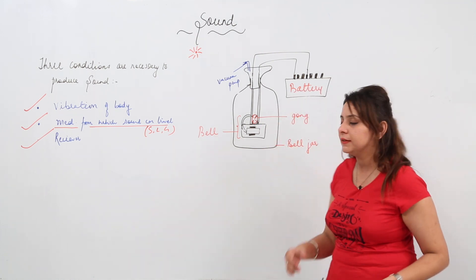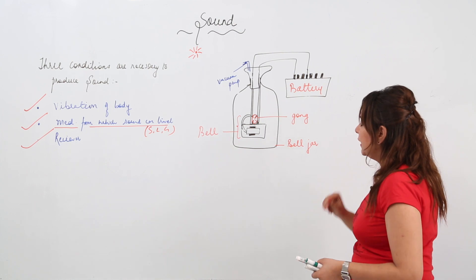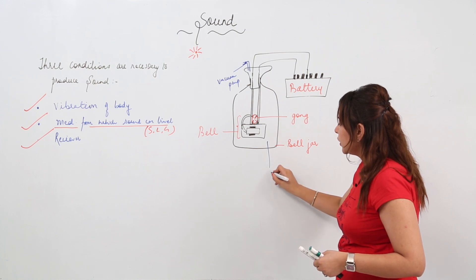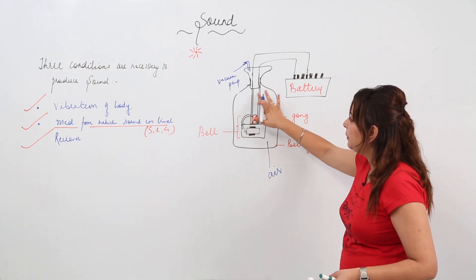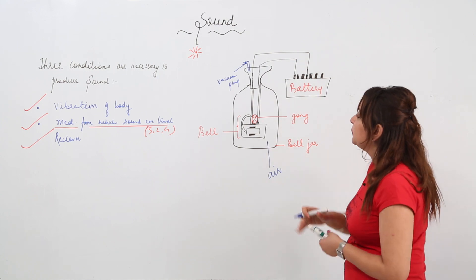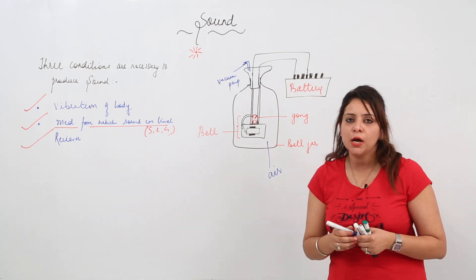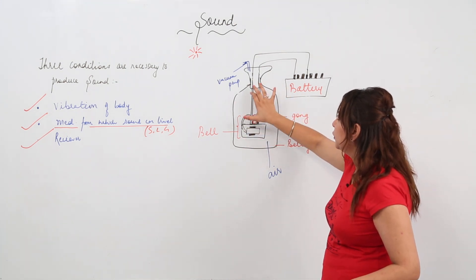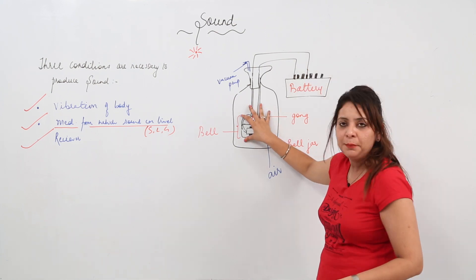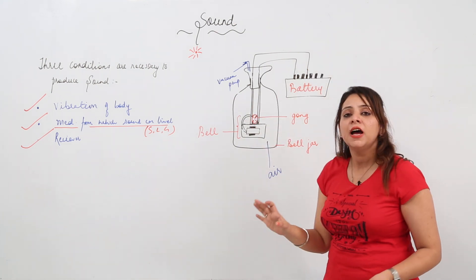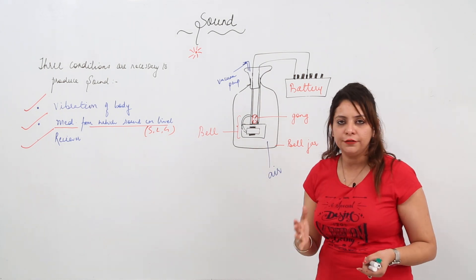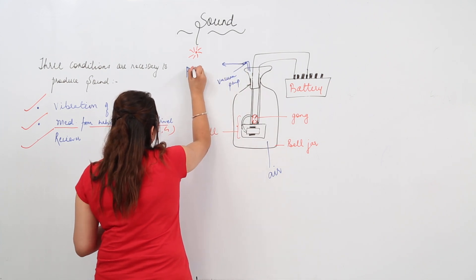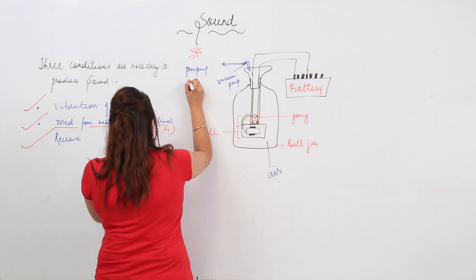This is a practical activity you can also do at home. There is a bell jar filled with air, with a bell fitted inside connected to a battery. The bell is ringing and we can clearly hear the sound of the bell. Now we start pumping out the air from the bell jar.